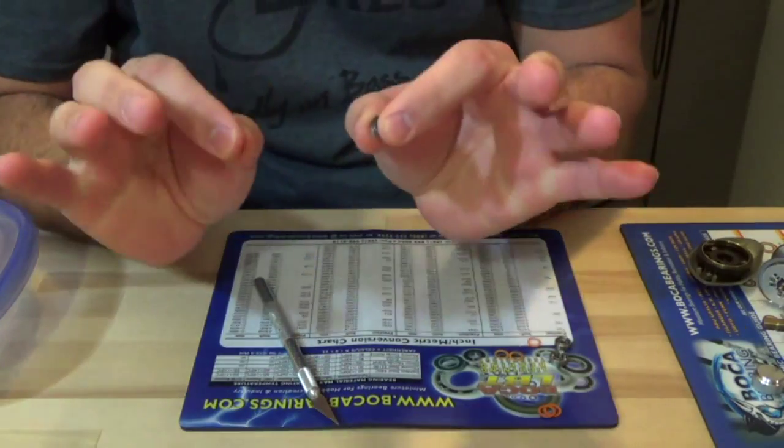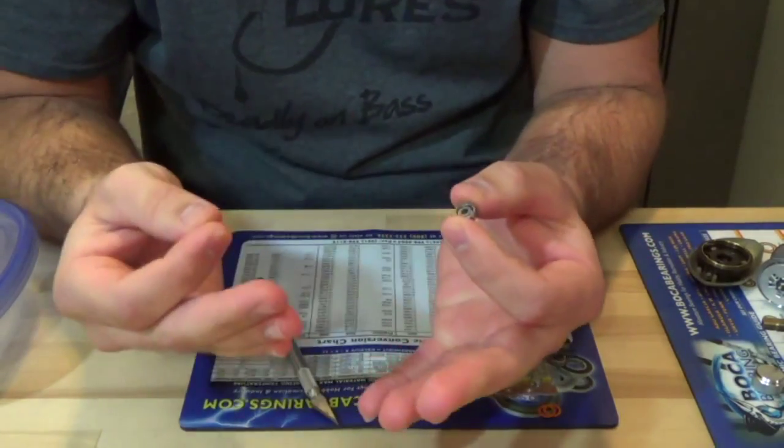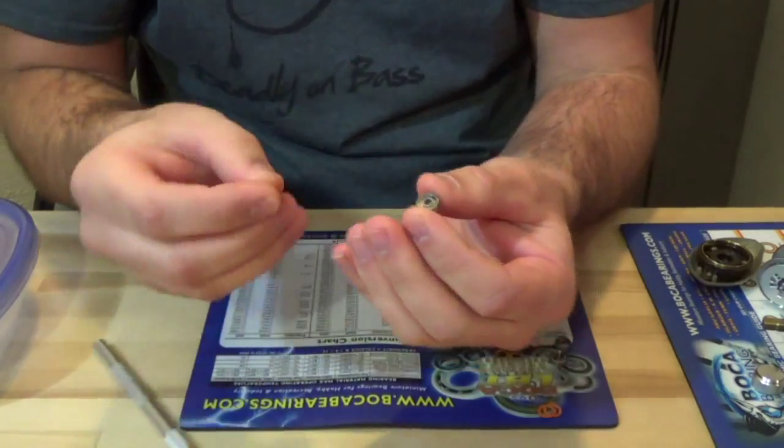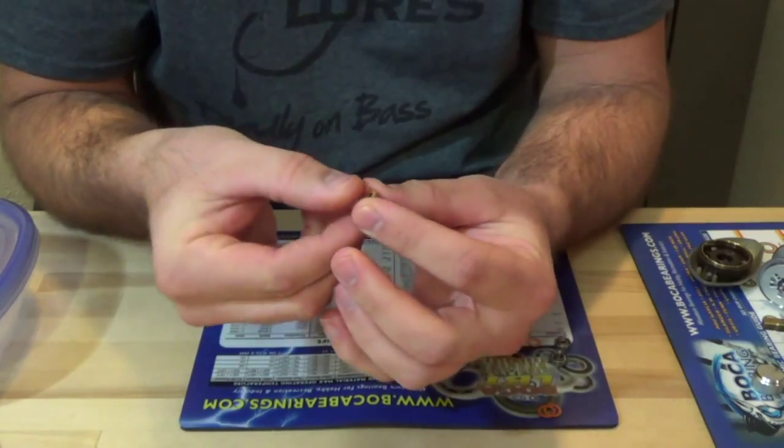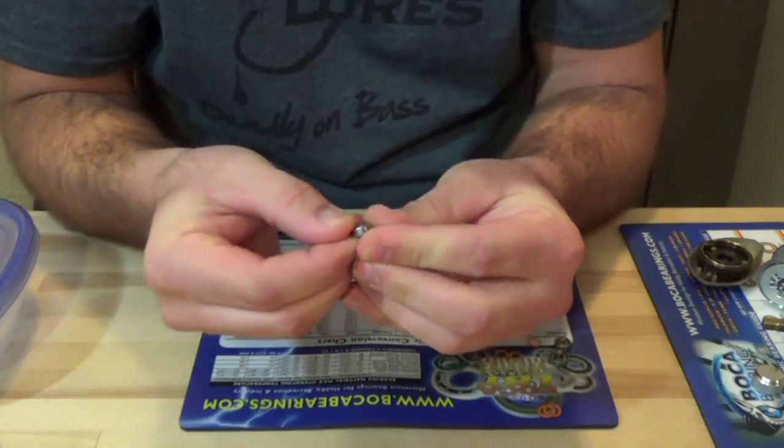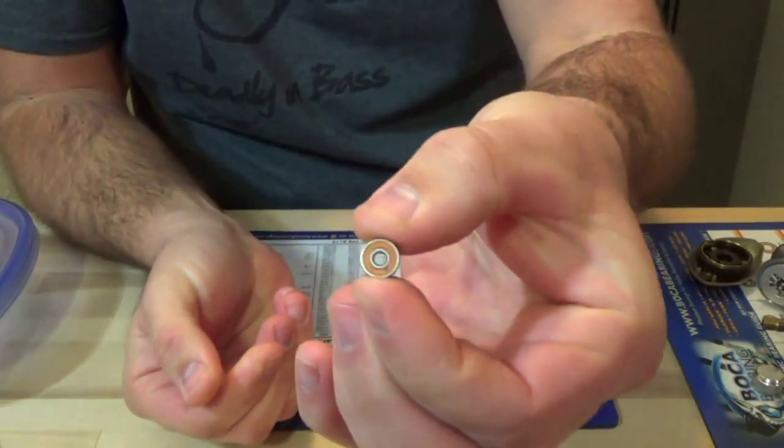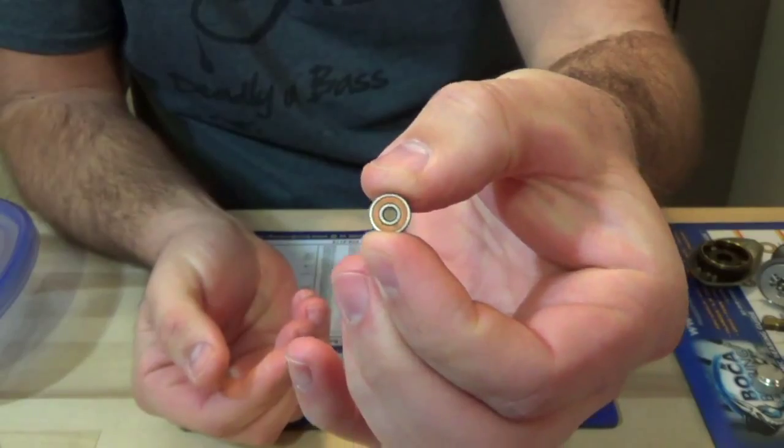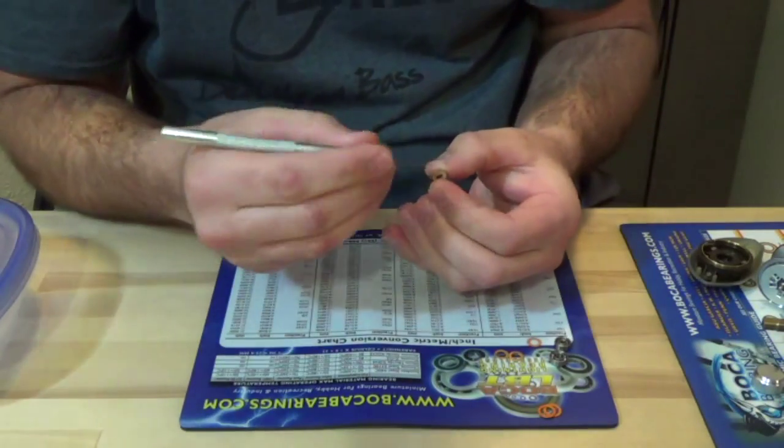Now when I'm done I'm not going to reinstall the seals, I'm going to run them with the seals off. But to reinstall the seals all you do is set it back in place and then just push it down. That's it. Easy to take off, easy to put back on. I'll go ahead and take this one off again.